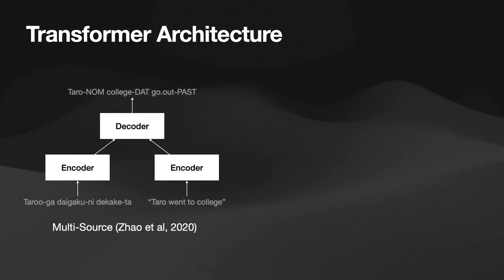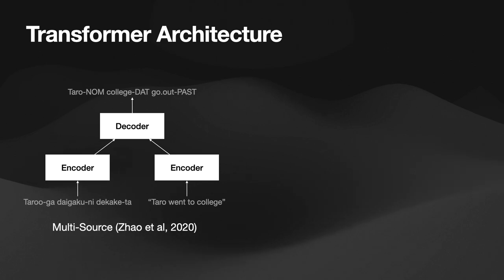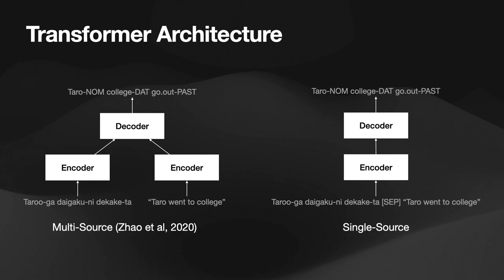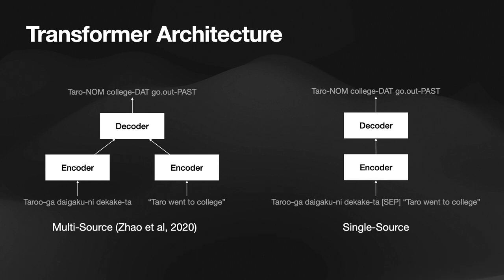The Zhao model uses a multi-source transformer model, where the transcription and translation sequences are considered separately until the last step. We use a single-source encoder-decoder transformer model, with the transcription and translations concatenated into a single sequence. Because the transformer uses self-attention, where each token in the input can consider all other tokens, we don't lose any information, and our model can learn the relationships between the transcription and translation with greater complexity.